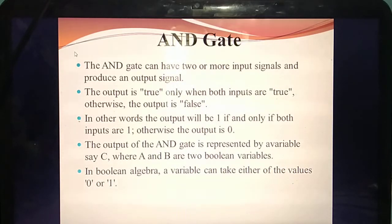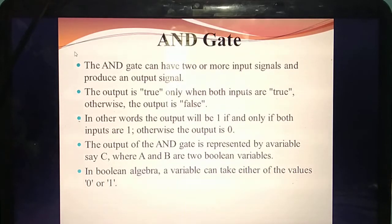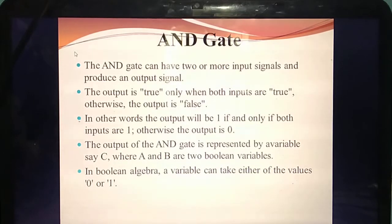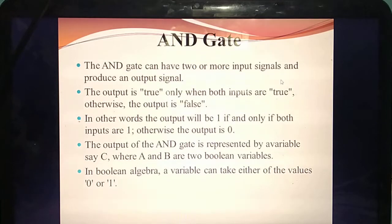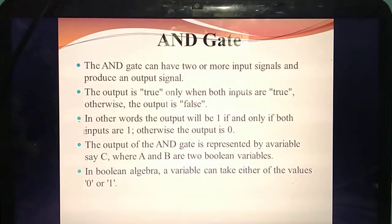When can we say the output is true? Take the AND gate: 1 and 1 — 1 into 1, the answer is 1. Remaining all combinations give answer 0. So the output is 1 only if both inputs are 1. That is, when A and B are both 1, the output is also 1. Otherwise the output is 0.